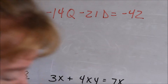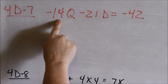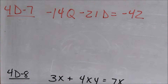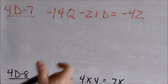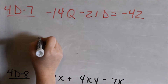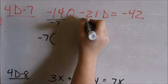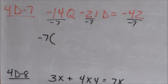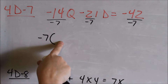Now looking at problem 4D7 — we're not solving here, we're just using reverse distribution, just factoring. You look at negative 14, negative 21, and negative 42, and ask: what is the most that I can factor out of each number? I can factor out a negative 7 out of each one.